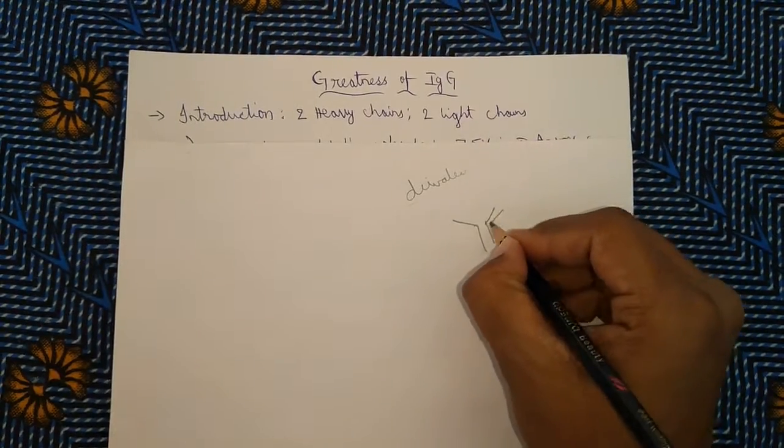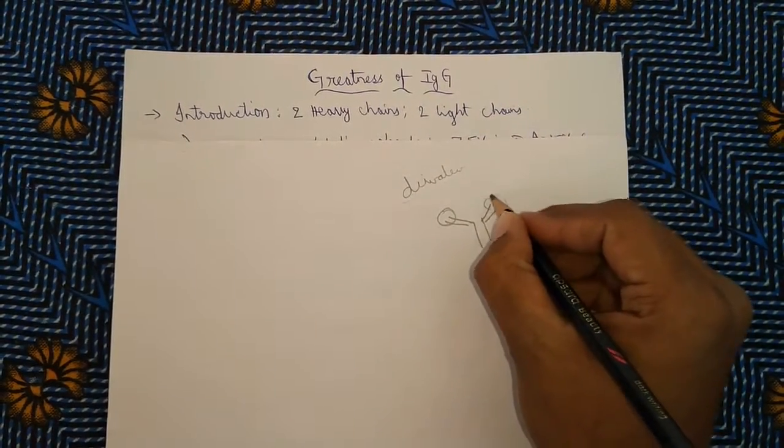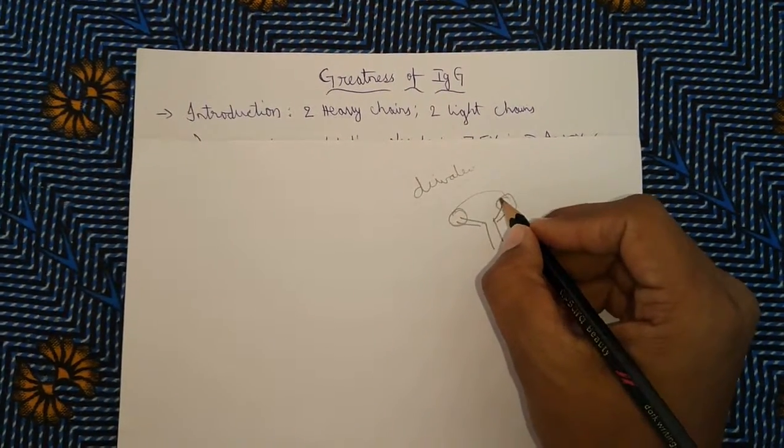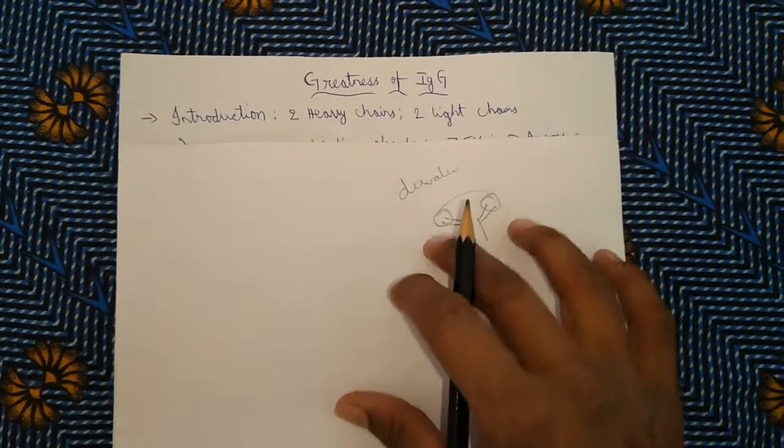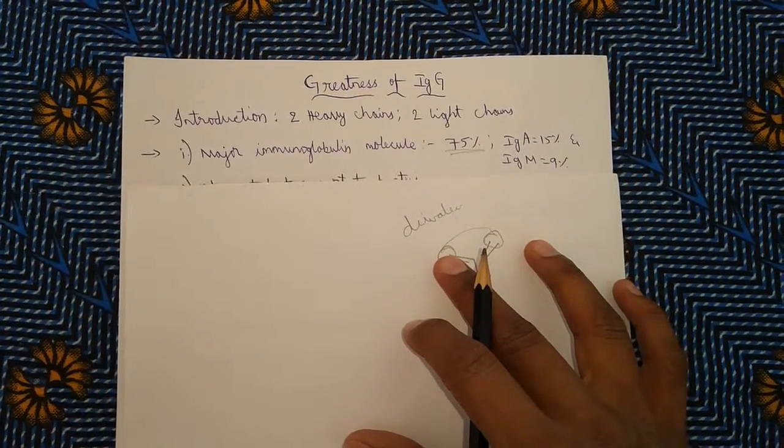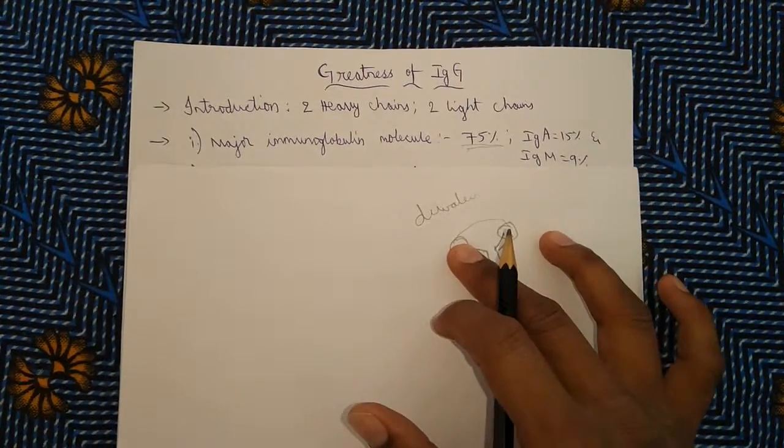For example, let us consider this is an IgG molecule. It has two identical antigen binding sites—this one and this one. This is called FAB. As these are identical, it is considered as divalent. Now let us discuss the special properties and characteristics of IgG which made it so special and great.